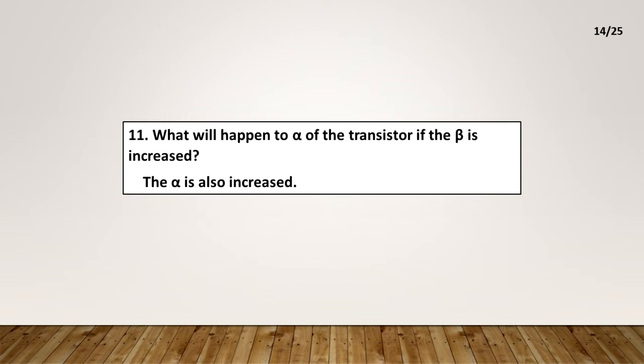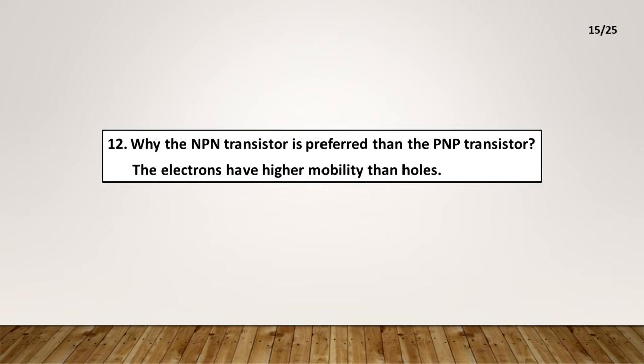What will happen to alpha of the transistor if the beta is increased? The alpha is also increased. Why is the NPN transistor preferred than the PNP transistor? The electrons have higher mobility than holes.